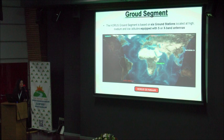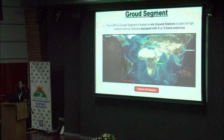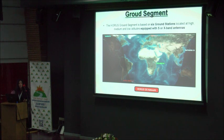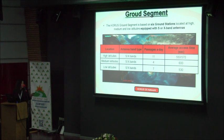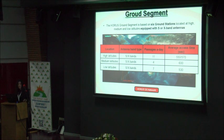This is our ground segment. We designed a network of six main ground stations at high, medium, and low latitudes, in order to be able to download all the data we collect per day. This is the analysis we performed for the amount of access we will have per day for all the latitudes considered, and we estimated that per day we will collect around 10 gigabytes of data.